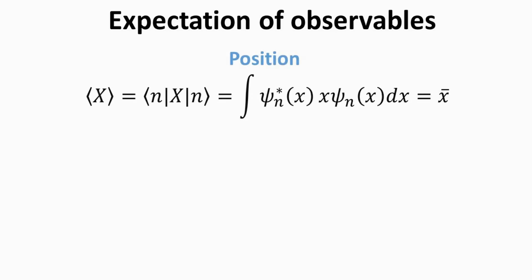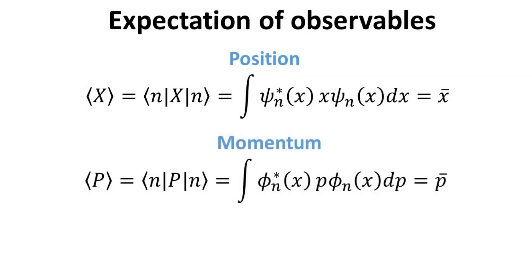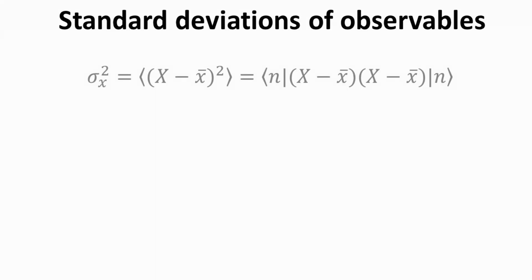Quantum mechanics provides an elegant way to compute the measurement statistics of observables. The expectation value of the position operator is given by the integrated product of the probability function with x, denoted as x-bar. The expectation value of the momentum operator can also be obtained in similar fashion, denoted as p-bar. Note that x-bar and p-bar are real numbers. The population variance, or standard deviation squared, is a measure of how individual measurements on average deviate from the mean. Variance is always a positive number.